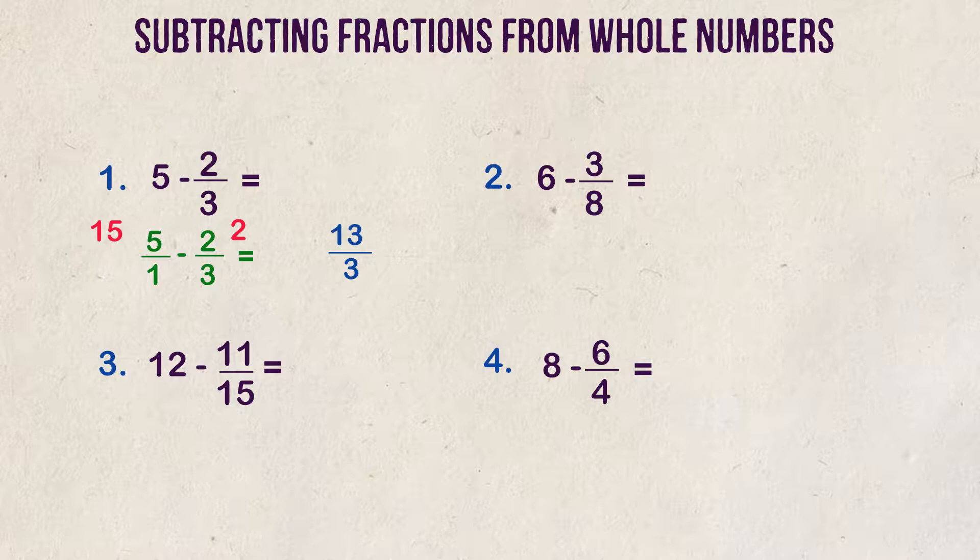13 over 3 is our answer. If you want to show it in mixed number or mixed fraction form, we divide 3 into 13 and get 4 with the remainder of 1 third left. 5 minus 2 thirds is equal to 4 and 1 third.